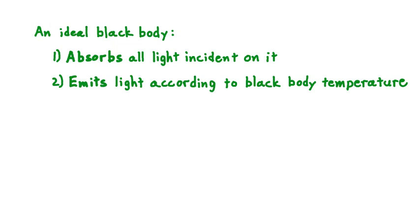Now, there's no real object that follows these two conditions perfectly. This is, after all, an idealized or perfect blackbody. But to a good approximation, many objects are like this. For example, it's possible to build a simple blackbody.